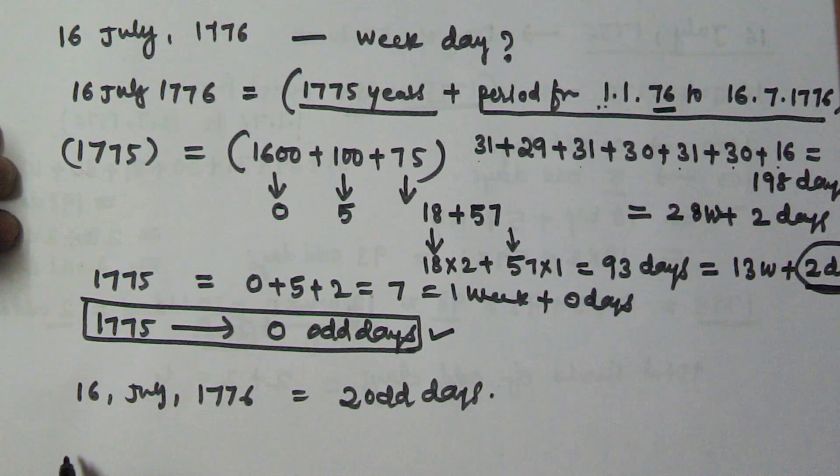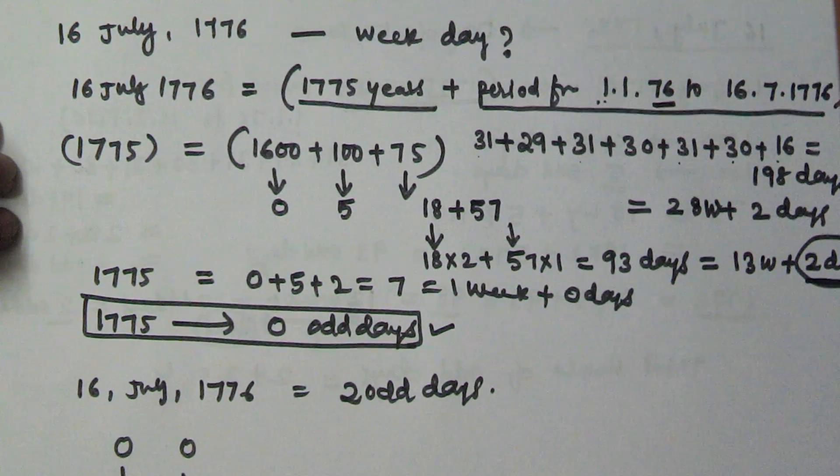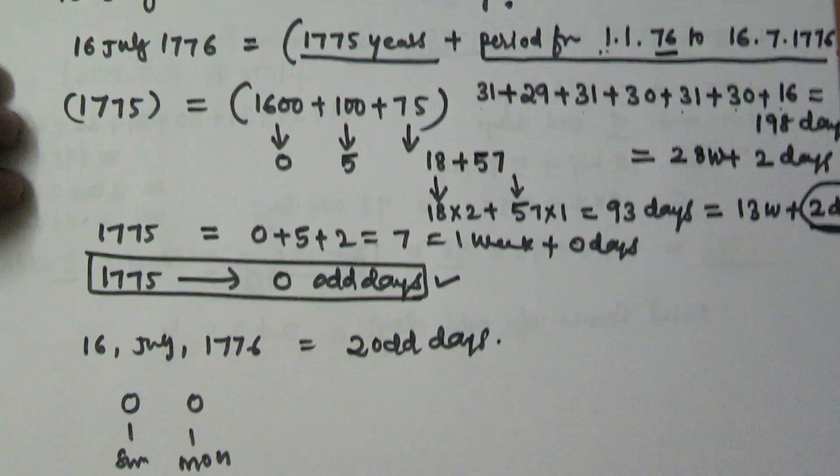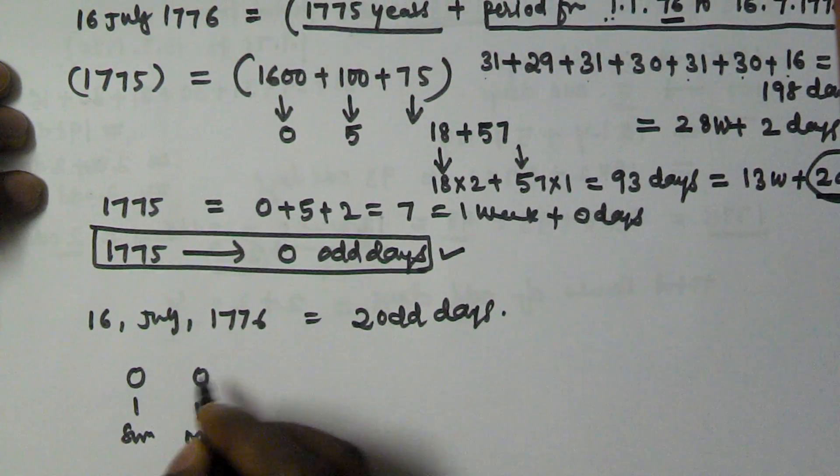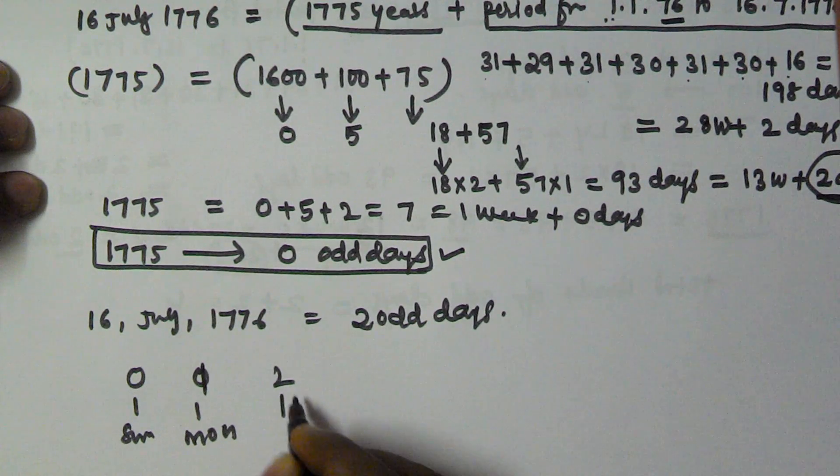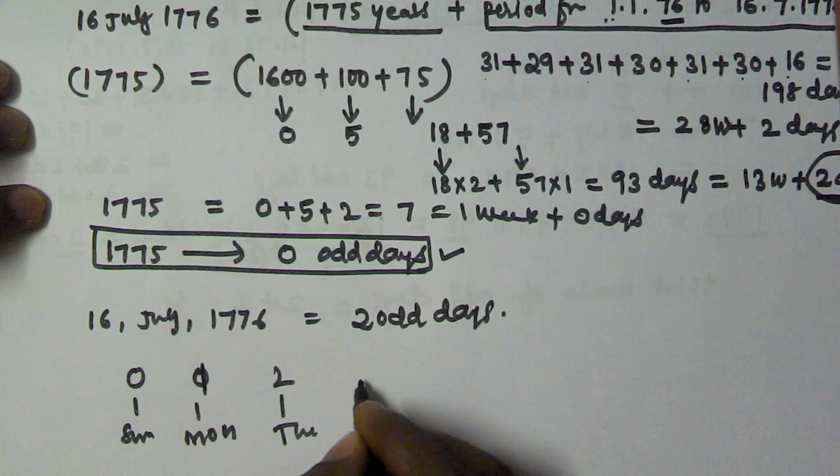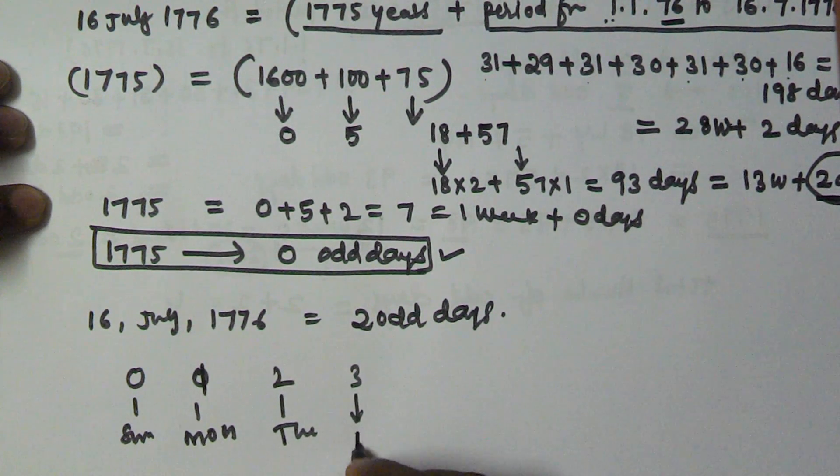In this concept, if 0 means Sunday, 1 means Monday, 2 means Tuesday, 3 means Wednesday...